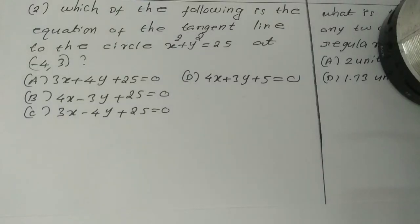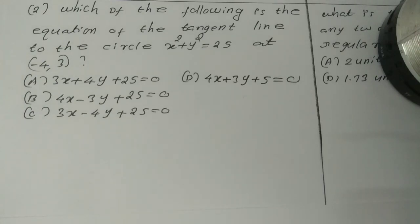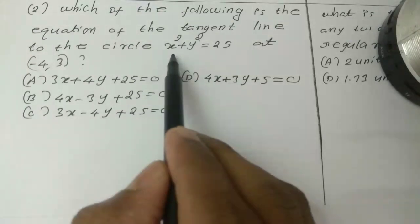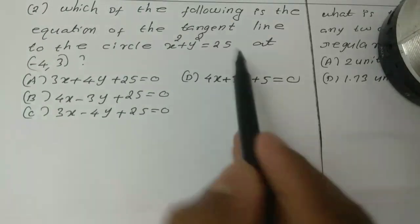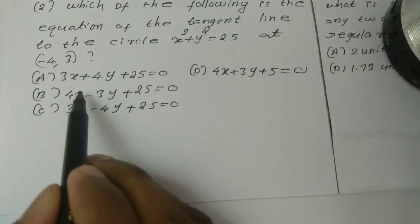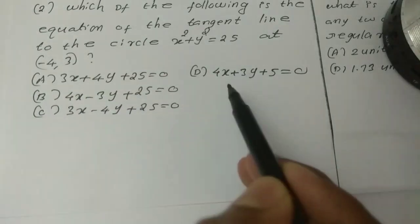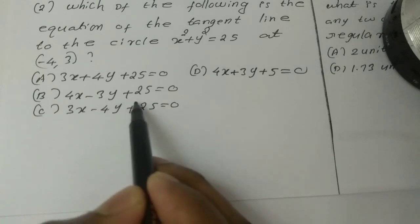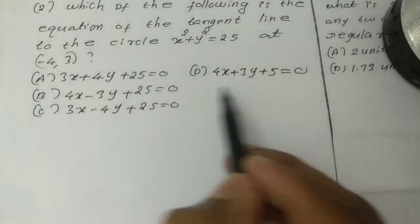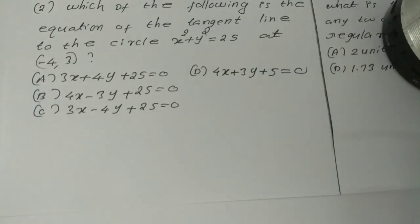Welcome to Candle of Physics Academy. In this video, we will discuss category 3 mathematics online coaching. The question is: which of the following is the equation of the tangent line to the circle x² + y² = 25 at the point (-4, 3)? Option A: 3x + 4y + 25 = 0. Option B: 4x - 3y + 25 = 0. Option C: 3x - 4y + 25 = 0. Option D: 4x + 3y + 5 = 0.